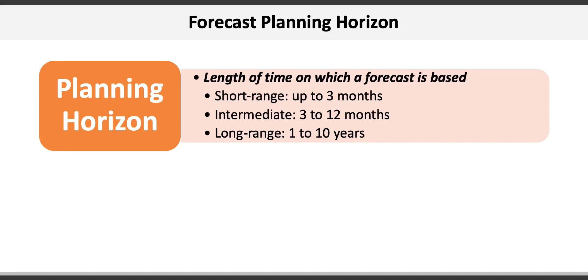Different types of operations management decisions are made in each of the planning horizons. For example, scheduling typically falls into the short range, inventory and production planning into the intermediate range, and major capacity and location decisions would fall in the long-range horizon.